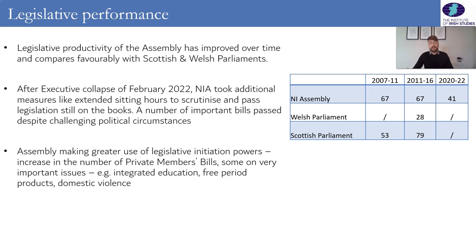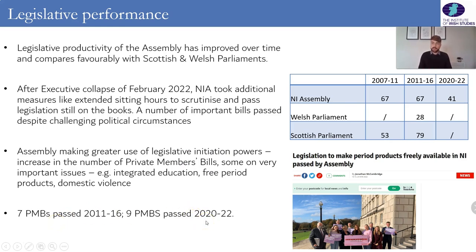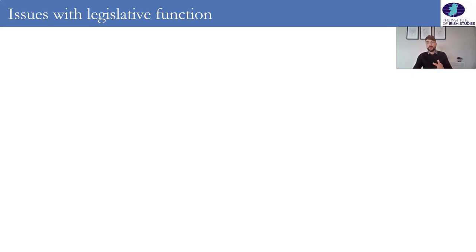Private members bills are a sign of an ever more confident Assembly — one that, in addition to the legislation coming from the executive, believes it has a legislative role to play in its own right. Looking at the statistics, from 2011 to 2016 the Assembly passed seven private members bills, but then from 2020 to 2022 — a shorter period — nine private members bills were passed. You can only imagine that without the institutional collapse we may have had a dozen or more, and private members bills are the sign of a confident, policy-active legislature.